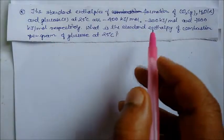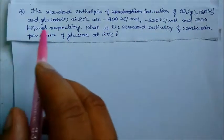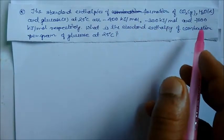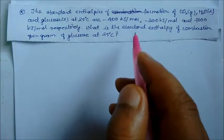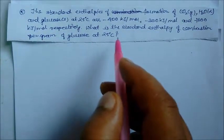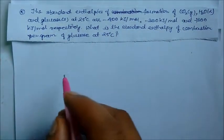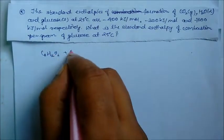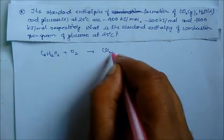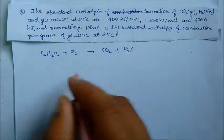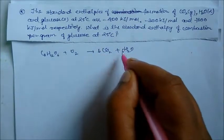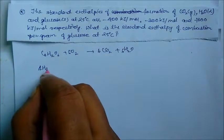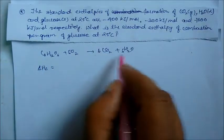The standard enthalpy of formation of carbon dioxide, water, and glucose at 25 degree centigrade are minus 400 kilojoule per mole, minus 300 kilojoule per mole, and minus 1300 kilojoule per mole respectively. What is the standard enthalpy of combustion per gram of glucose at 25 degree centigrade? Write the equation: C₆H₁₂O₆ plus 6 O₂ gives 6 CO₂ plus 6 H₂O.